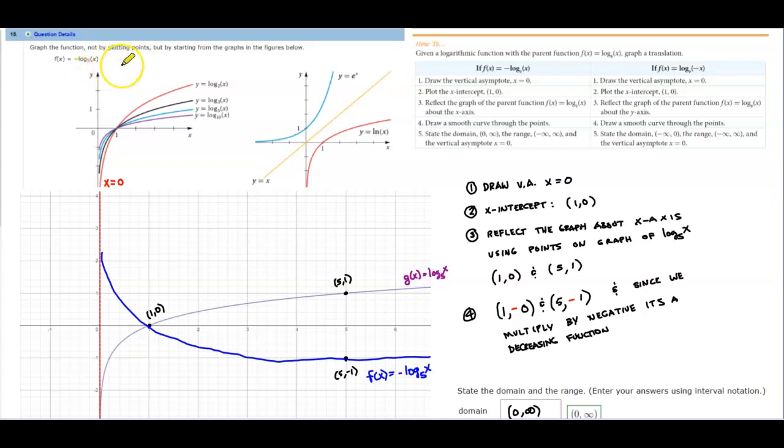We want to graph the function not by plotting points but by starting from the graphs in the figures below by looking for a parent function. So the parent function for this function is f(x) which is equal to log base 5 of x.